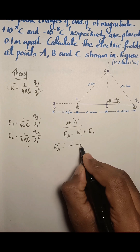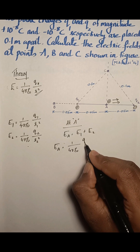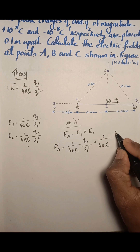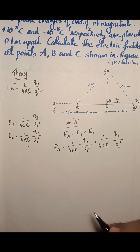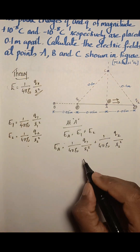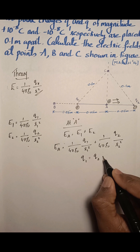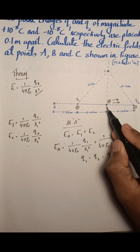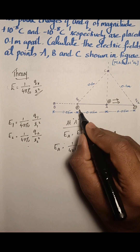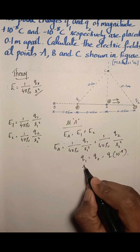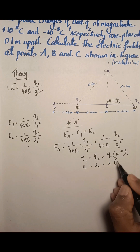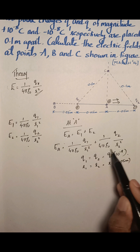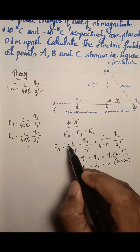The electric field at A equals (1/4πε₀) × Q1/r1² + (1/4πε₀) × Q2/r2². In this question, both charges have the same magnitude, so Q1 = Q2 = q = 10 raised to minus 8 coulomb. Since A is the midpoint of Q1 and Q2, r1 = r2 = r = 0.05 meter. Since the two terms have the same magnitude, instead of adding them we can multiply by 2.